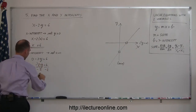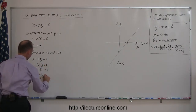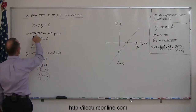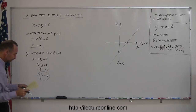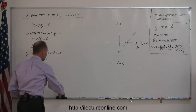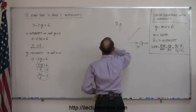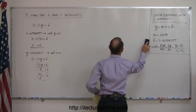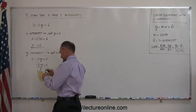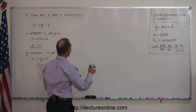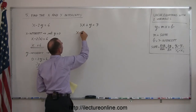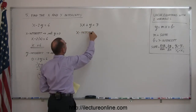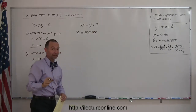To find the y-intercept, I set x equal to zero. Whenever we cross the y-axis, the x-value of that equation has to equal zero. So we take our equation and set x equal to zero: zero minus 2y equals 6, or minus 2y equals 6. Divide both sides by the numerical coefficient of y, and we get y equals 6 divided by negative 2, which is negative 3. So y equals negative 3 is the y-intercept, and x equals 6 is the x-intercept.